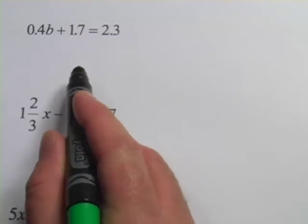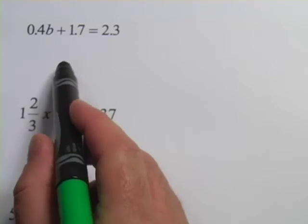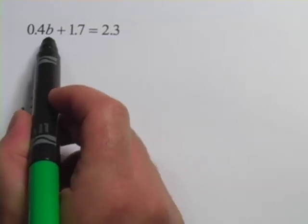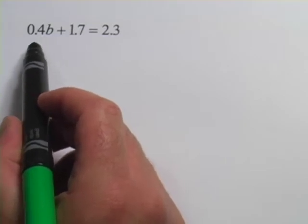In these problems, we're doing some real algebra. We're solving for a variable in some pretty complex situations. When you're solving for a variable, you want to try to get the letter, the unknown, all by itself on one side of the equation.